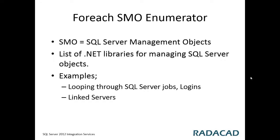Some of this information is the same as what you can get from the ADO.NET Schema Rowset Enumerator, but some information is easier to fetch here — like fetching linked server details. You can actually fetch linked server information via ADO.NET Schema Rowset as well, but this is just another way to do it, and sometimes this method is easier and sometimes the other one is easier.